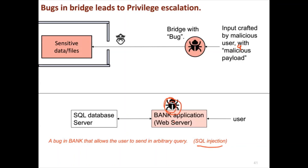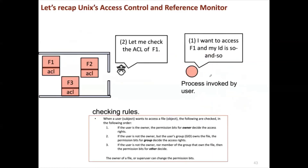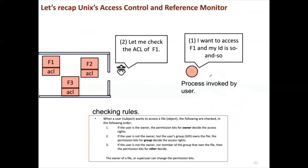Let's look at how Unix implements controlled invocation. Unix does so by using two user IDs for every process: the real UID and the effective UID. In the Unix file system, files are the objects and processes are the subjects. Every process is associated with a user — when Alice logs into the system, a process is created with Alice's user ID.